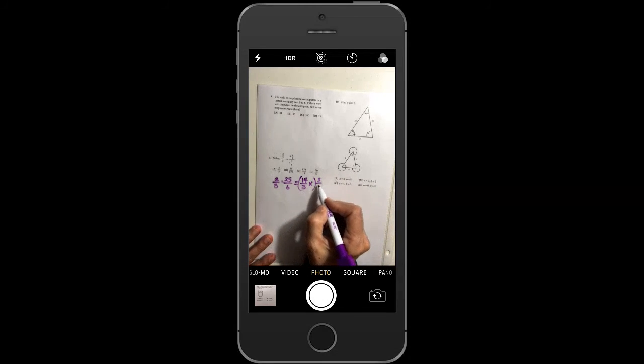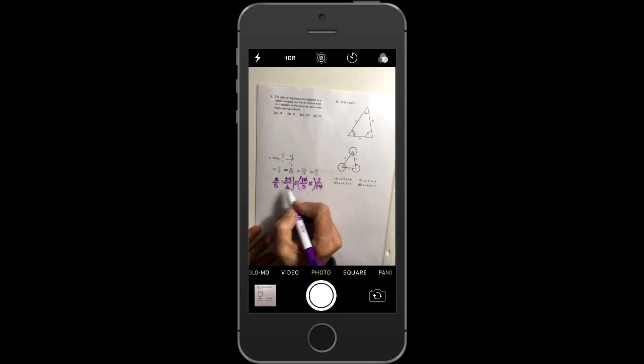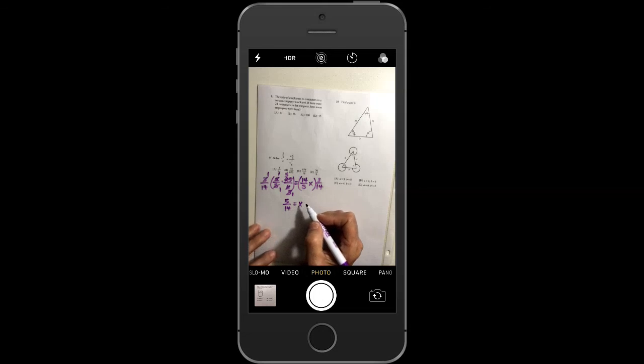You're going to multiply by the reciprocal. You don't even need to do a separate step. Just put 3 over 14. 5 will cancel out 5, and 5 will go into 25 five times. 2 will go into 6 three times. 3 will go into 3 one time. And that leaves us the answer of 5 fourteenths equals x.